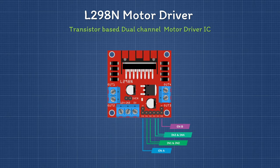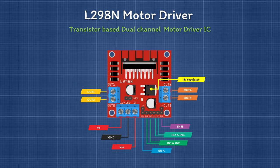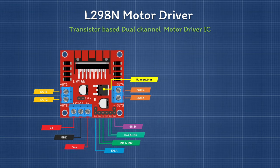Looking at the L298N module pinout, all control inputs are in pin header form at the bottom side, containing four direction pins along with two enable pins. Output channels for the motors are broken out to the edge of the module via two screw terminals. The module is powered through three-pin screw terminals consisting of motor power supply, ground, and 5 volt logic power supply — though you can skip the logic supply as this module has a built-in 5 volt voltage regulator.